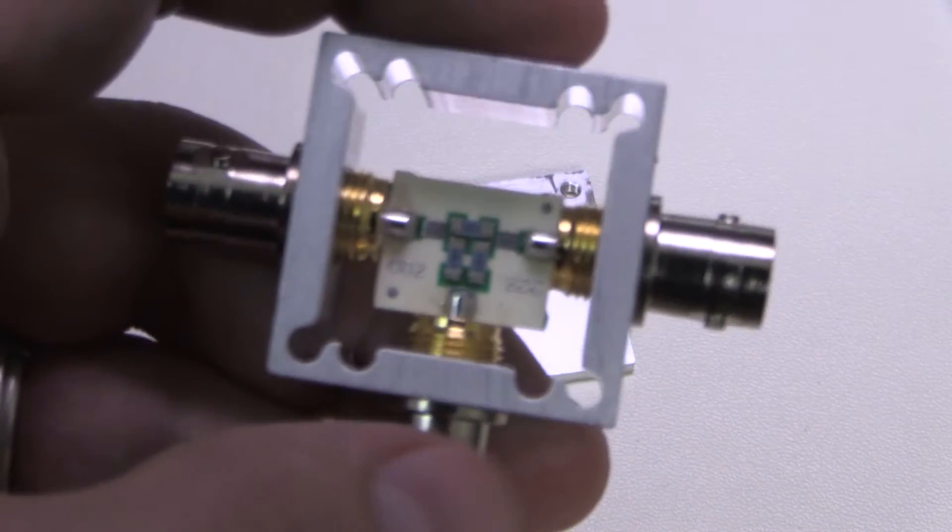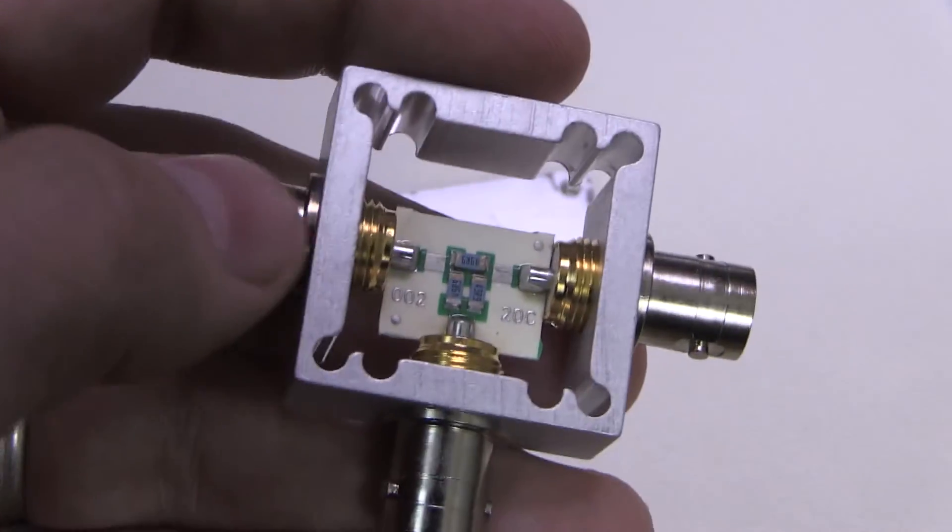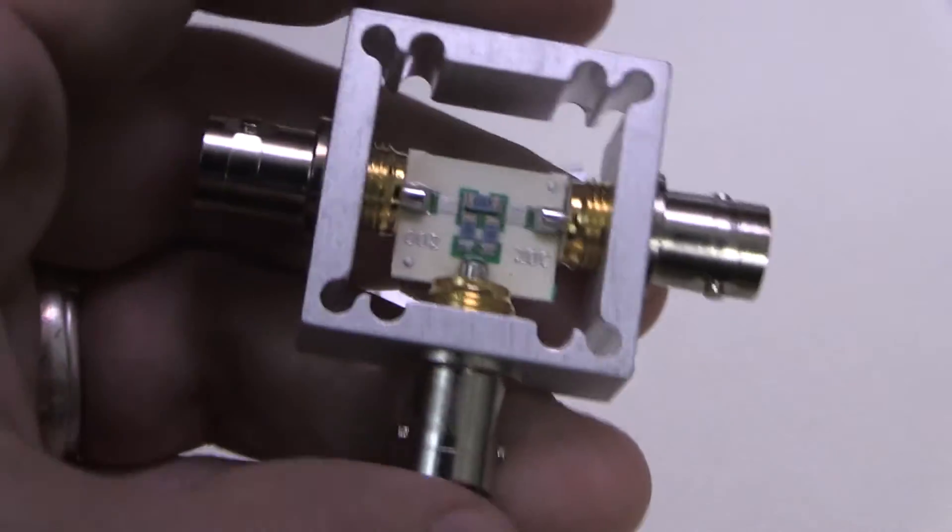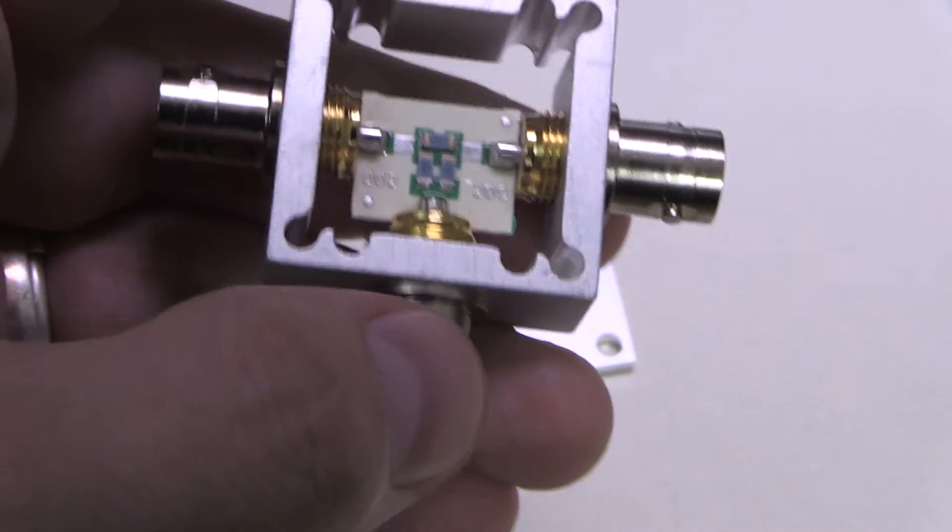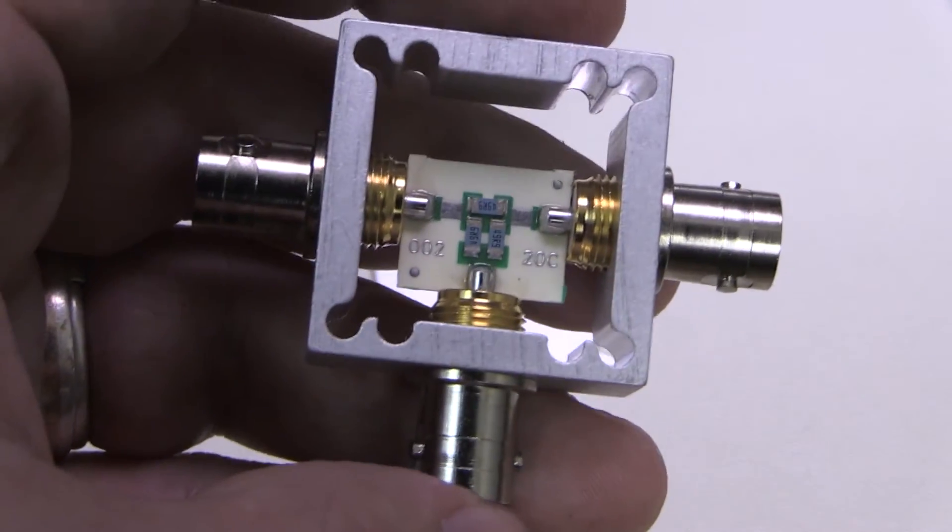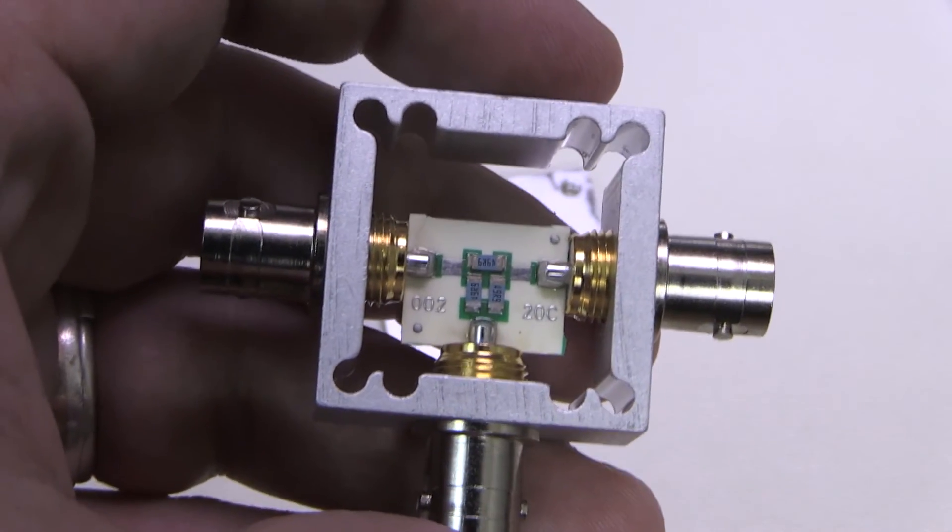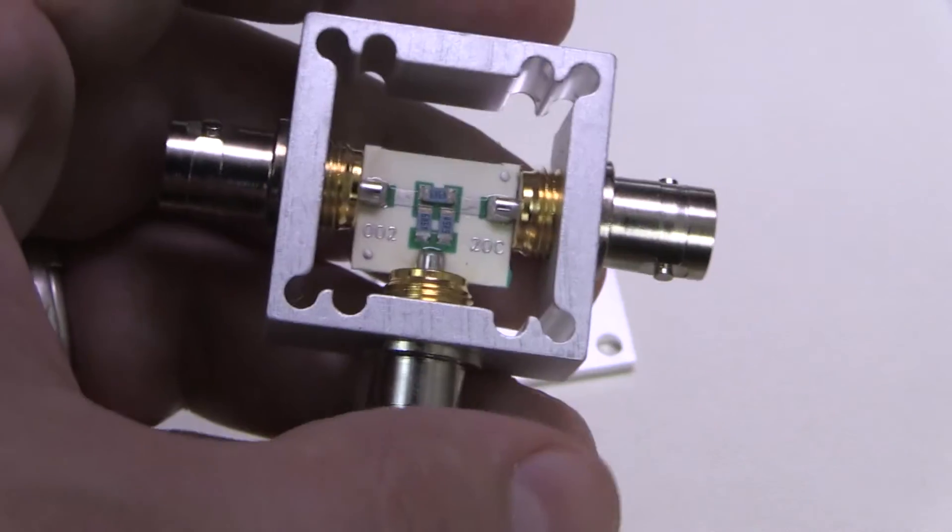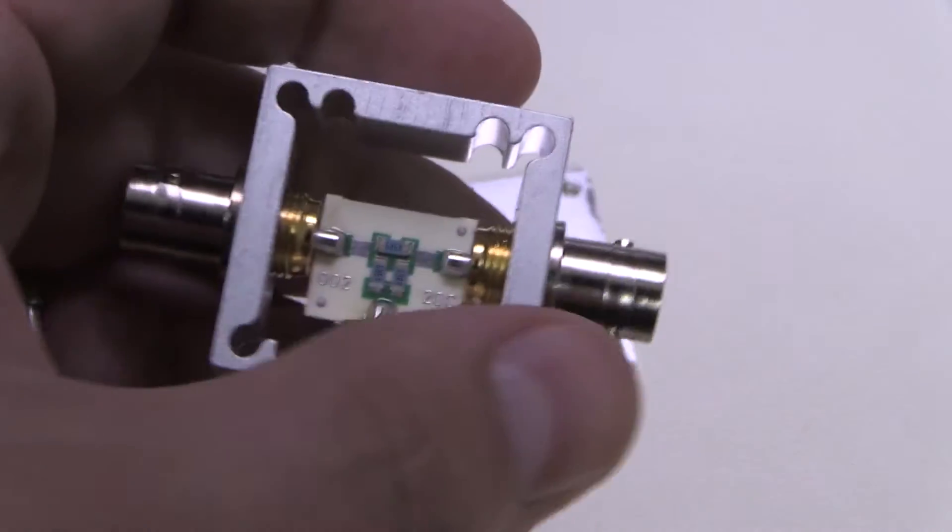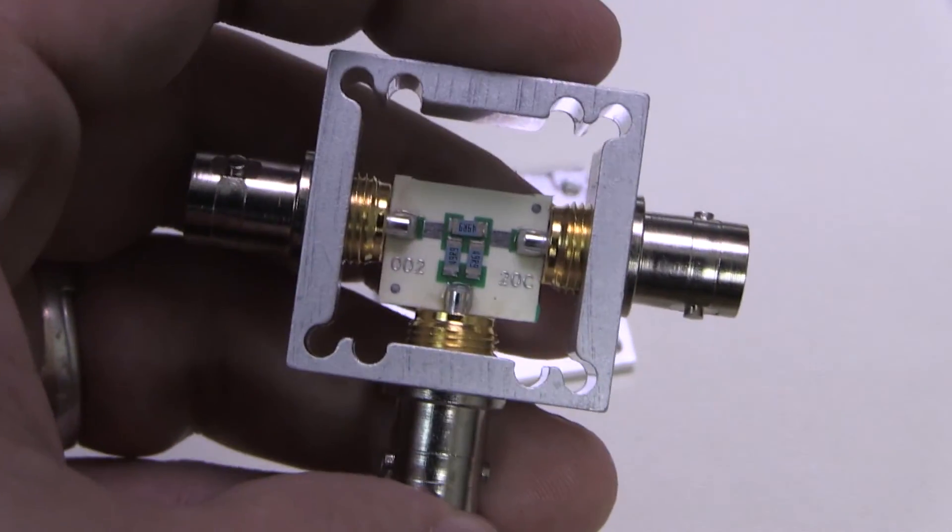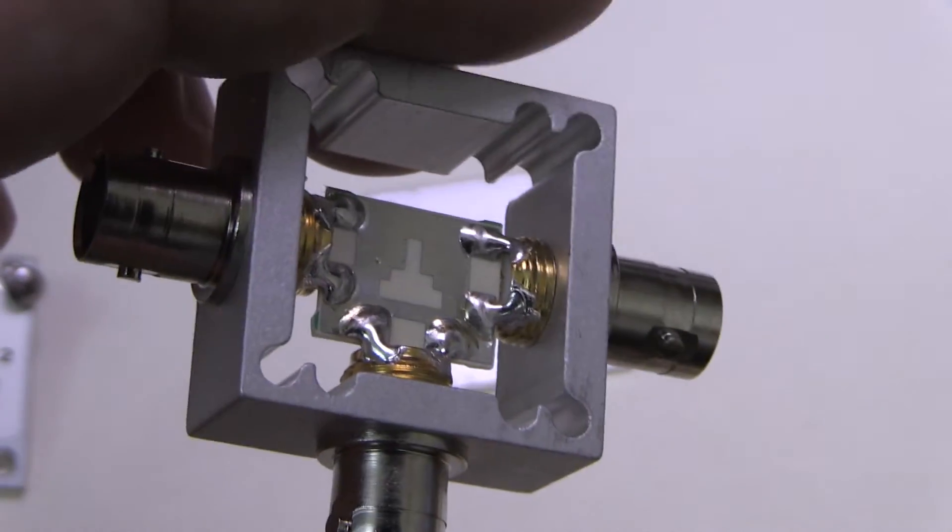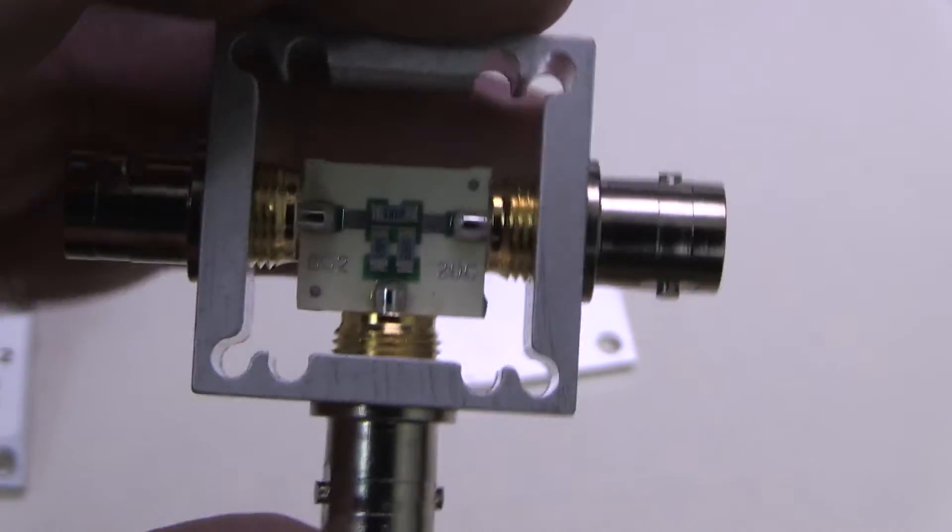That's all that's inside really, and there's not much to it. Down here, this is your common port, and right here you have port number one, port number two, or rather two and three if you want to call this port one. Those are your two split ports and this here is the common port. Like I said, you can use those things either as a splitter - put in your signal right here and get a 6dB reduced signal out here and out here - or you can put two signals in here and in there and get a combined sum signal out of there.